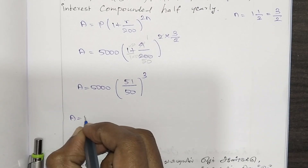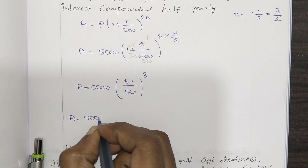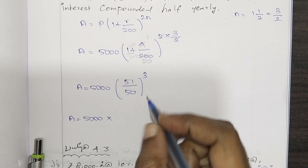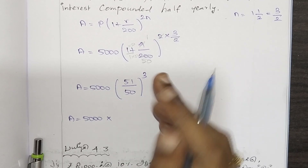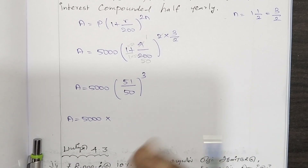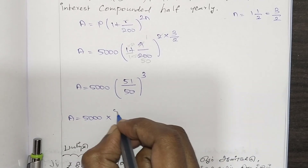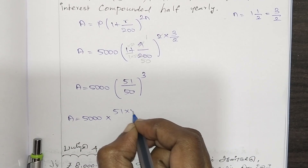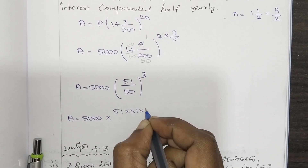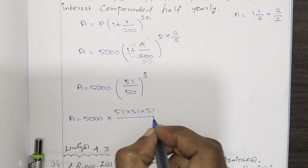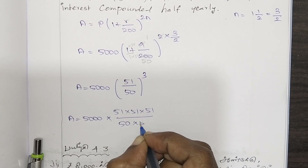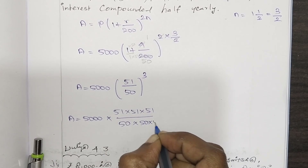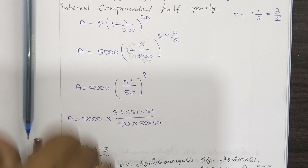Now A equals 5000 into 51 by 50 whole power 3. Expanding: 51 into 51 into 51, divided by 50 into 50 into 50.